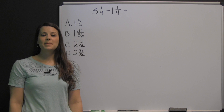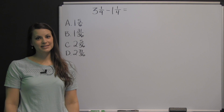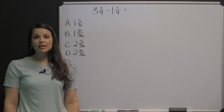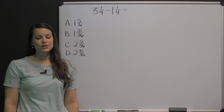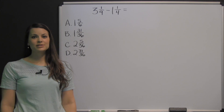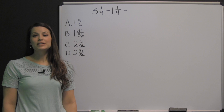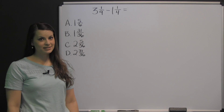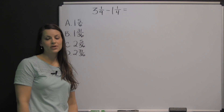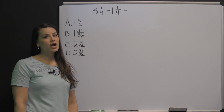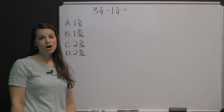This is a question from the mathematics computation portion of the TABE practice test. For this section, you will not be allowed to use a calculator, so you need to be prepared to answer these questions just using a pencil and paper. Let's practice: three and one-ninth minus one and one-fourth. In order to add or subtract fractions or mixed numbers, you must have a common denominator.